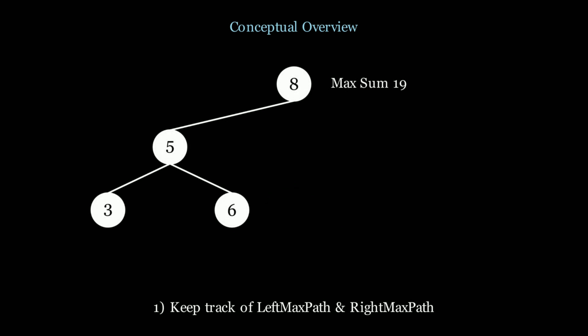Before we start with the main algorithm, I want to go over a conceptual overview with a couple of different edge cases and examples so you can truly understand what the algorithm is going to do. In this first example we have nodes 8, 5, 3, and 6, and the maximum path is 19 — you take 8, 5, and 6. The question I want to ask is: from node 5's perspective, how did I know to choose node 6 instead of node 3? Why didn't I choose path 8, 5, 3?